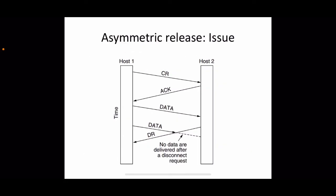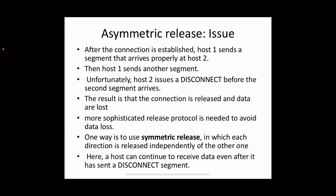The problem with asymmetric release is illustrated here: host one establishes a connection, sends data which is received by host two, but host two doesn't want to send any data, so it requests a disconnection and terminates the connection. But host one still wants to continue data transmission, so data is lost. After the connection is established, host one sends a segment that arrives properly at host two, but then host two issues a disconnect — and data gets lost. A more sophisticated release protocol is needed to avoid data loss.